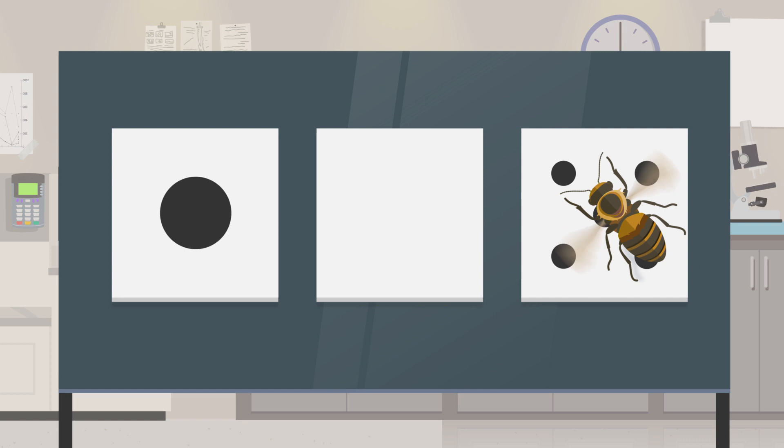Scientists trained bees to choose the picture with the least number of dots from a set of dot pictures. And when faced with images of dots versus a blank card, the bees were more likely to select the nothing card. Which is pretty impressive, considering humans have been thinking about the concept of zero for millennia and still run into problems with it.